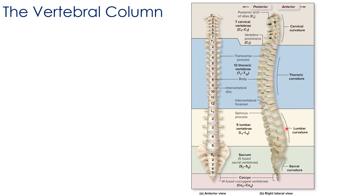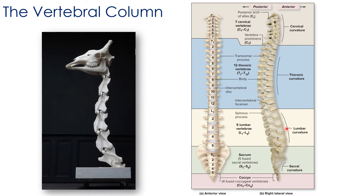As a fun fact, almost all mammals have seven cervical vertebrae regardless of body size. For example, the giraffe skeleton also has the exact same number of vertebrae in its neck as humans do, but the giraffe's vertebrae are quite a bit larger.